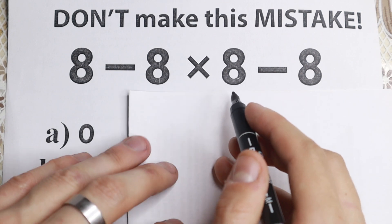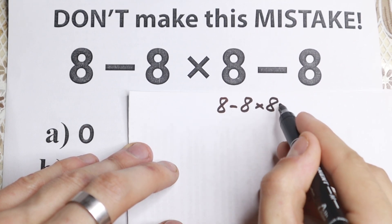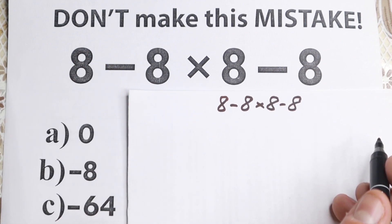Okay, so here is the problem. We have 8 minus 8 times 8 minus 8. And I want to start with the main common mistake right here. A lot of students do this mistake, so take a look closely.